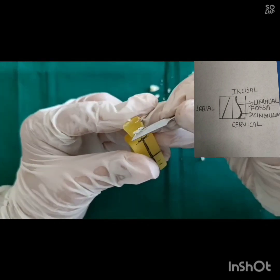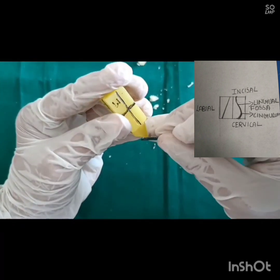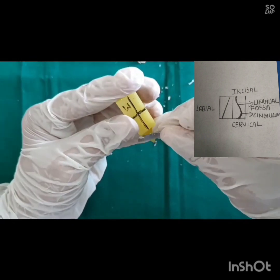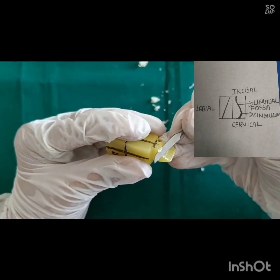On lingual outline, crown is concave or convex. Note that lingual fossa is concave and cingulum is convex and carve according to it.